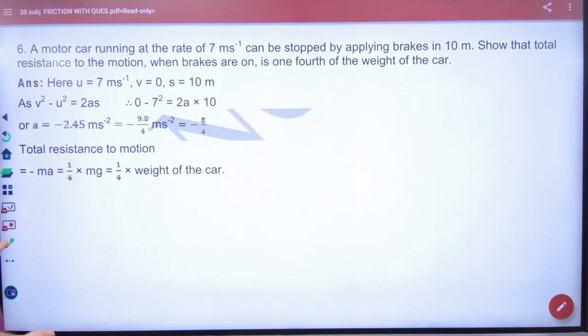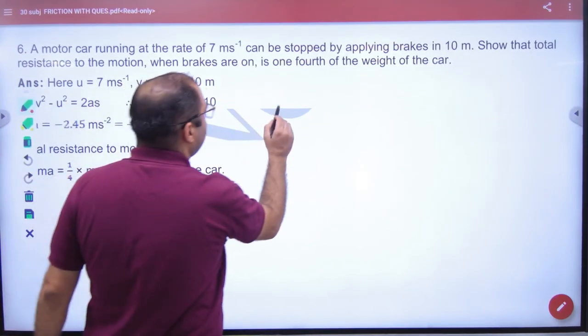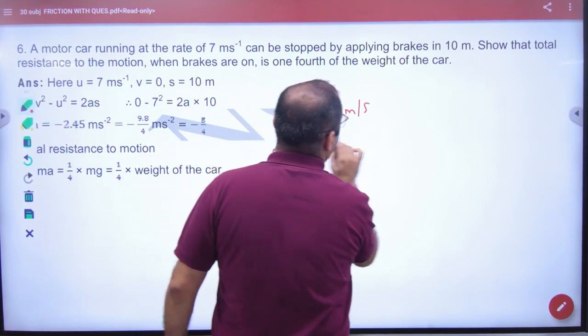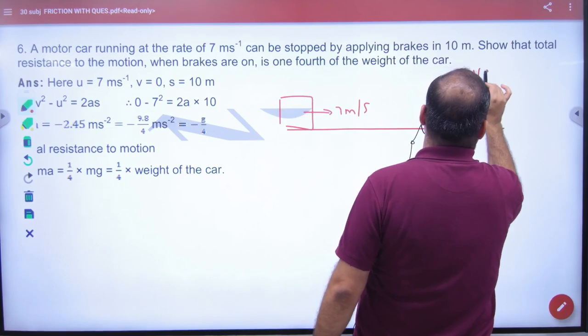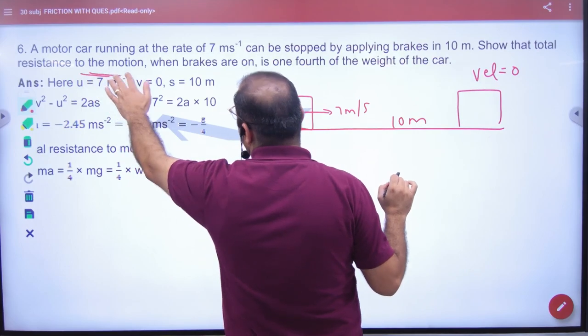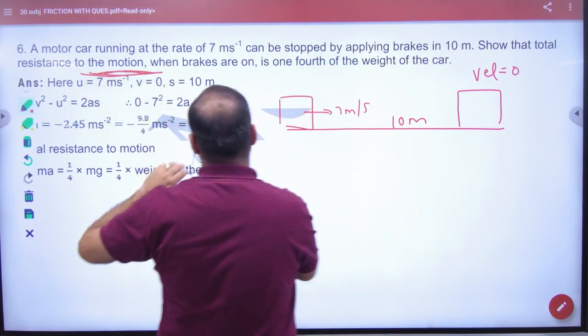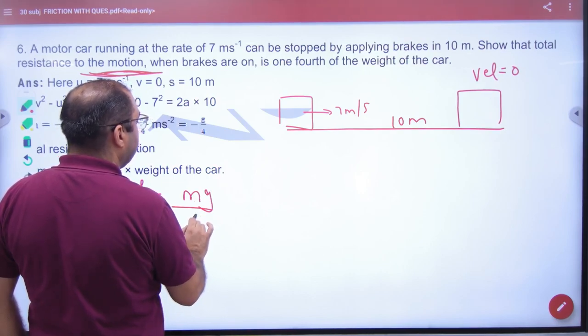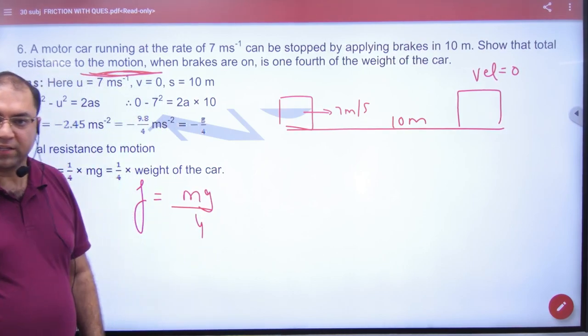Question 6: A motor car running at 7 m/s can be stopped by applying brakes in 10 m. Show that the total resistance of the motion, that is friction, is one-fourth of the weight of the vehicle. This is what you need to prove.